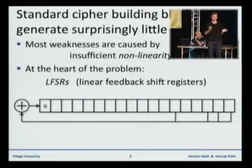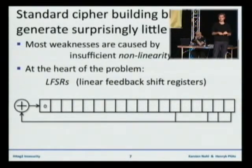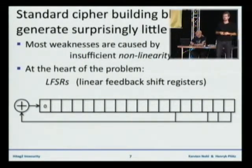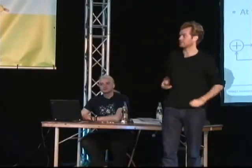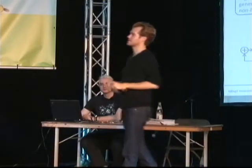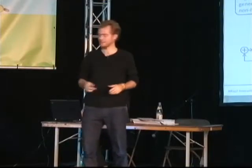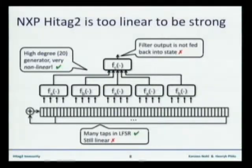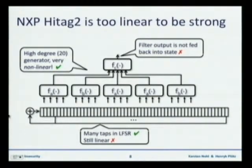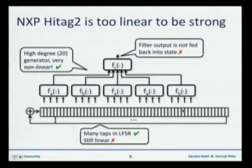HITECH uses this too, being a proprietary stream cipher. So HITECH is highly vulnerable against reversing attacks. This is the HITECH cipher — it has a fairly large linear feedback shift register, only one, with 48 bits in the state. These bits are XOR-ed over and over with themselves, producing XOR terms where each cell is of length at most 48.